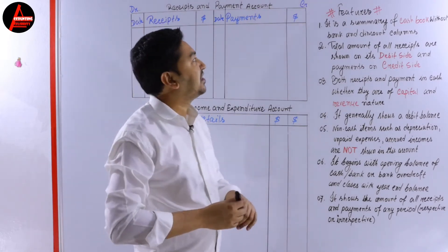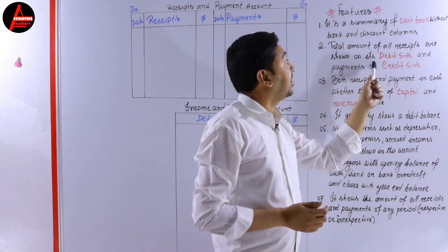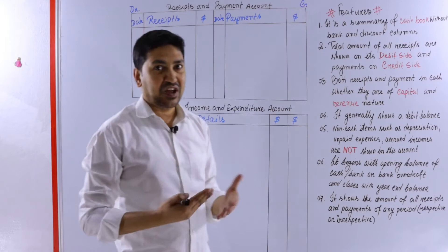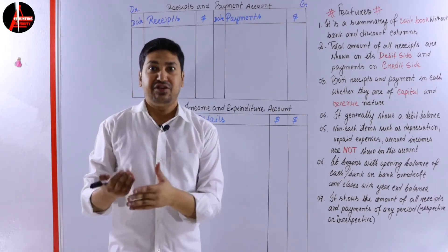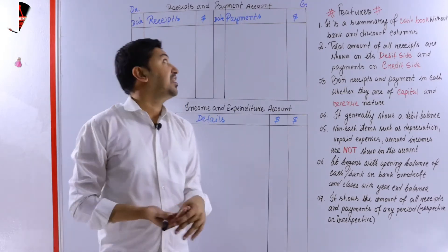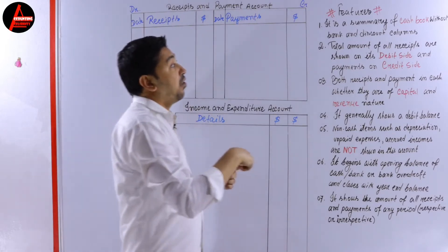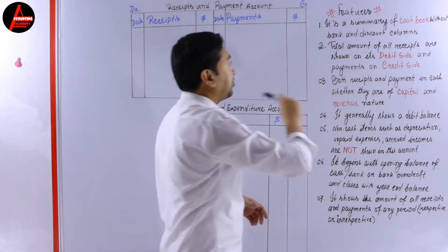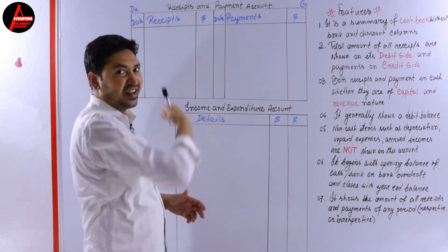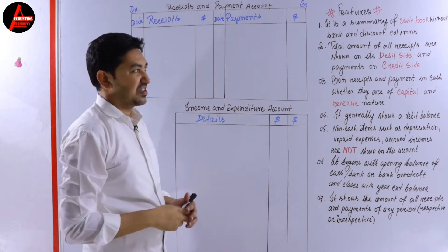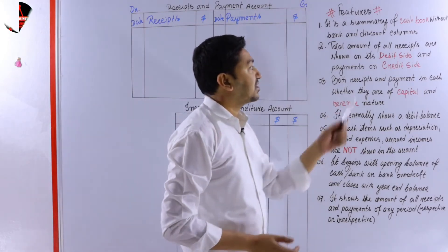Number two: the total amount of all receipts are shown on the debit side. So whatever comes in - if you receive any cash - it comes in the debit side. And if it goes out it will be in the credit side. That means all payments will be on the credit side and all receipts will be written on the debit side.